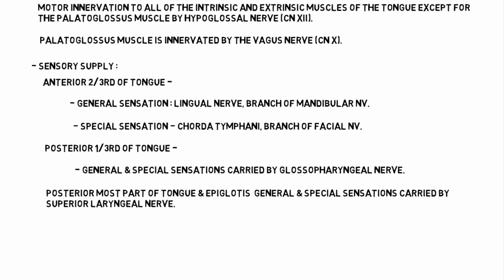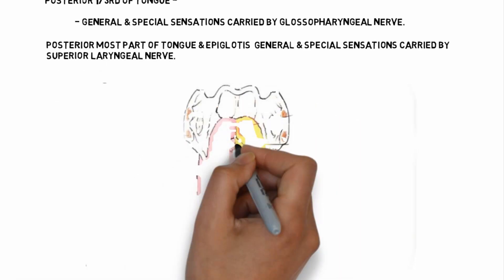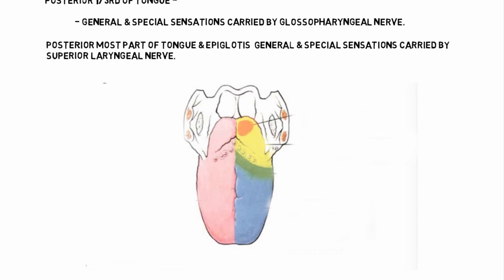These are the sensory and motor supply of the tongue. Here is the diagram of the tongue.